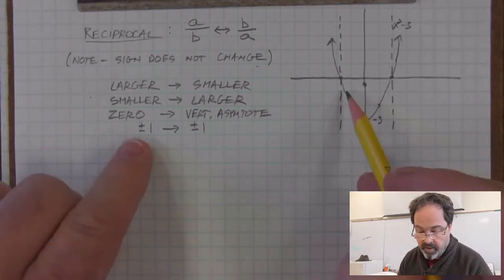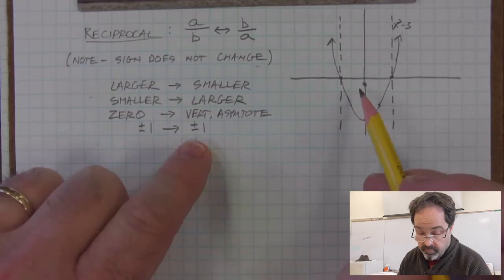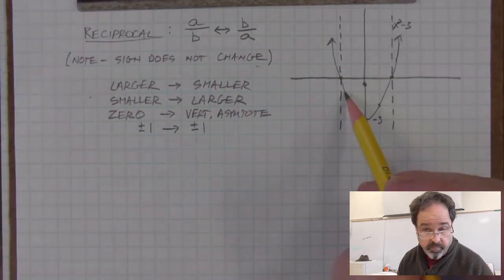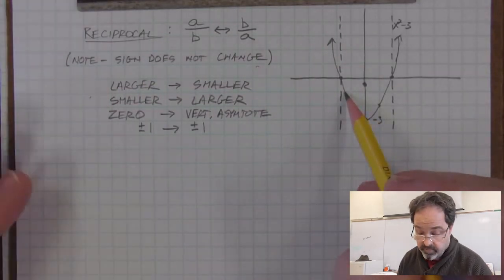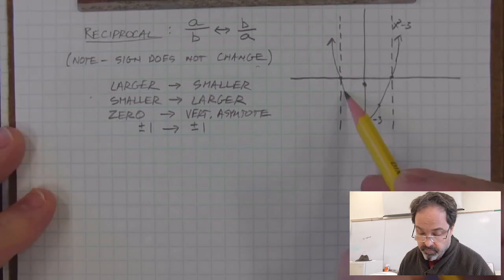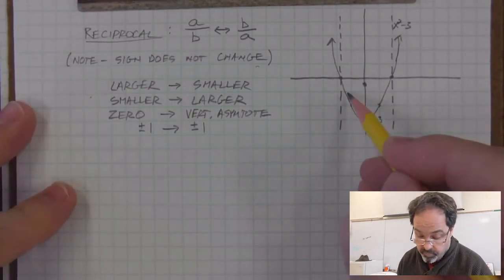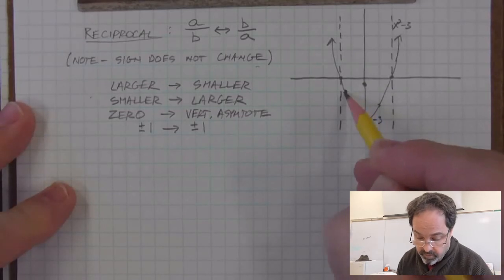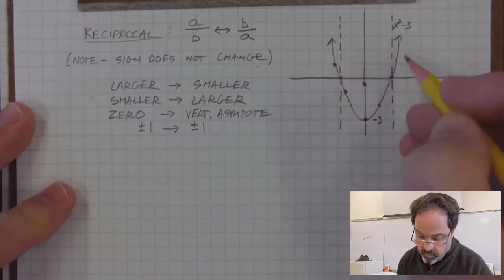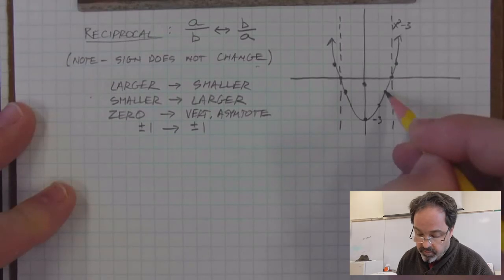Next, I'm going to look for positive and negative 1s, because those points, when I take the reciprocal, are going to remain at the same place. Here we have the value of the function at negative 1. The reciprocal is negative 1, so this point is going to be on my new graph. So is positive 1 and this other negative 1 here.